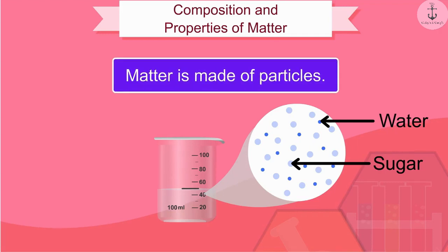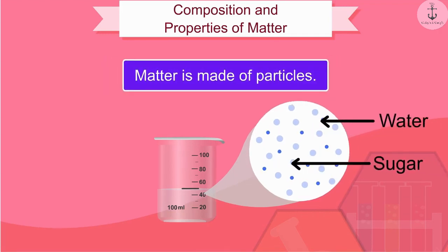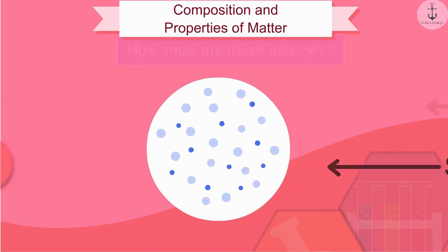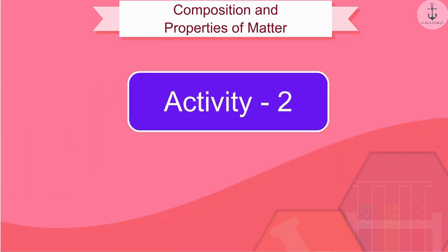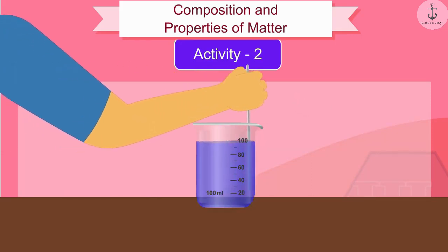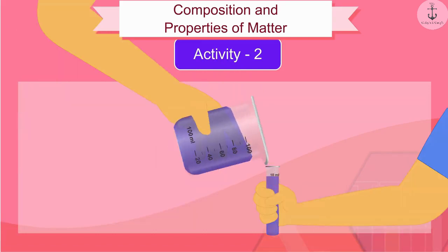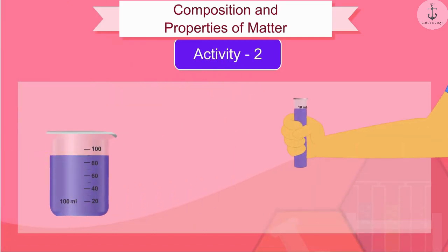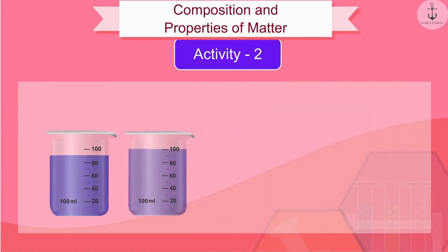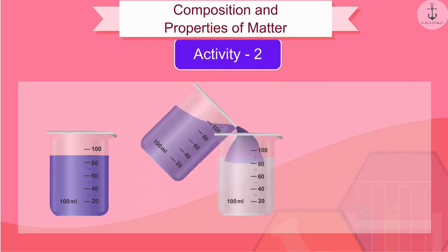We have come to know that matter is made of particles. But, how small are these particles? Let us try to find this out by an activity. Dissolve 5 drops of ink in 100 ml of water. Take out about 10 ml of this solution and mix it in 90 ml of water. Similarly, keep this solution diluted for 5 to 8 times.